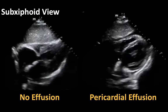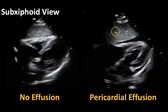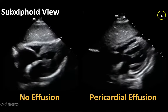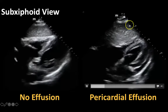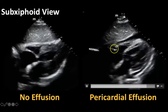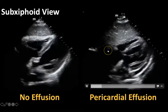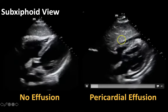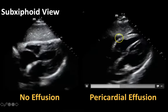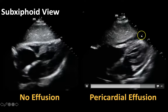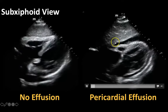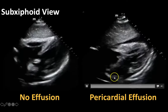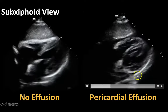Then we look at this heart on the right side of the screen — the same sub-xiphoid view. We have our liver here and then our heart here. We're training our eyes again to look around the heart in its pericardial sac, and here we do see a pericardial effusion. We see this black fluid all the way around the heart — this is circumferential pericardial effusion.